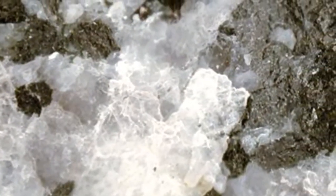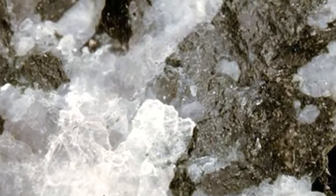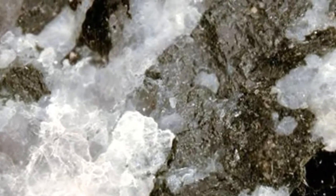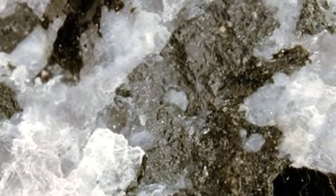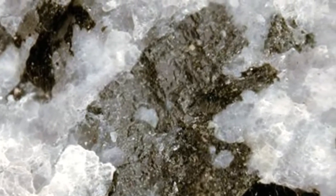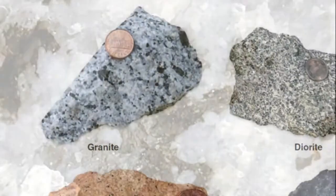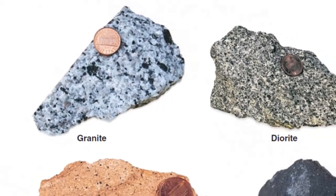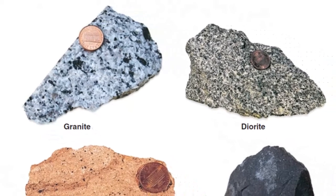What is pegmatitic texture? Under special conditions, exceptionally coarse-grained igneous rocks, called pegmatites, may form. These rocks, which are composed of interlocking crystals all larger than a centimeter in diameter, are said to have a pegmatitic texture.